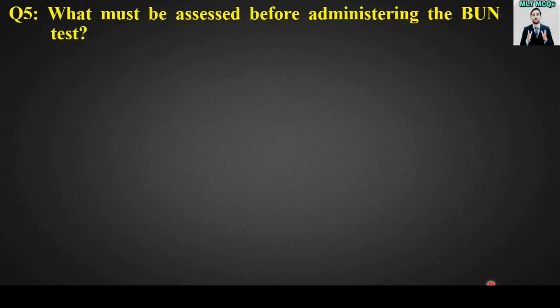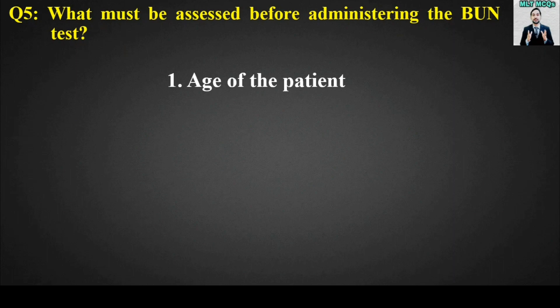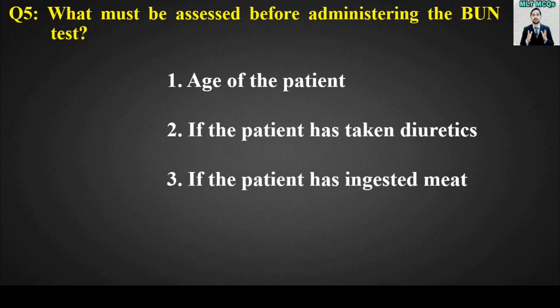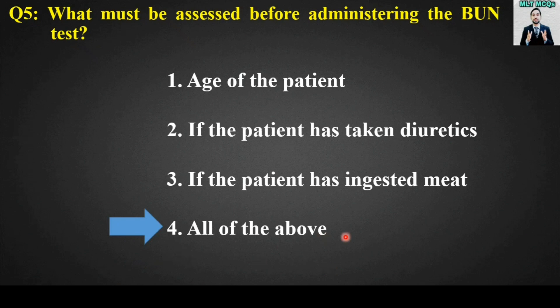MCQ number five: What must be assessed before administering the BUN test? Options are: age of the patient, if the patient has taken diuretics, if the patient has ingested meat, all of the above. The right answer is option number four — all of the above. Age of the patient, whether the patient has taken diuretics, and whether the patient has ingested meat must all be assessed before administering the BUN test.